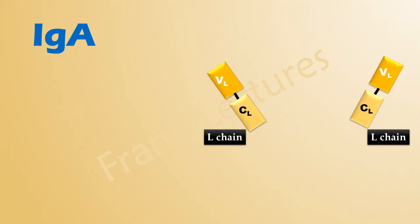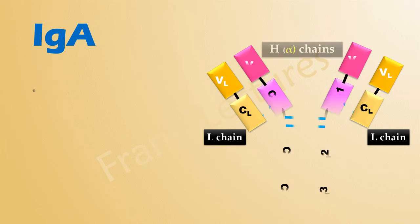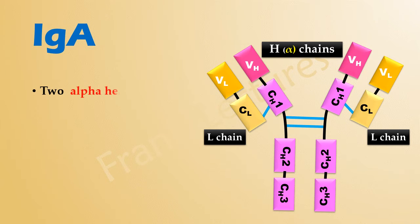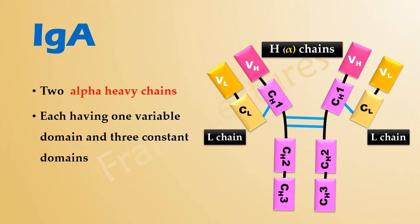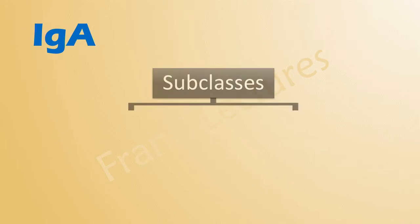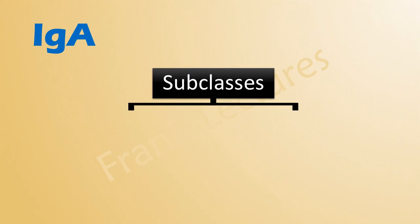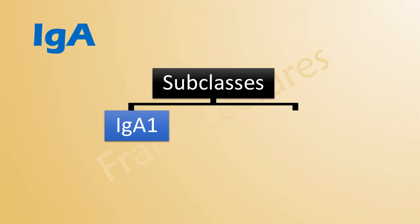Structurally, IgA consists of two light chains and two alpha-heavy chains. Each heavy chain contains one variable domain and three constant domains. There are two subclasses of IgA, designated as IgA1 and IgA2.